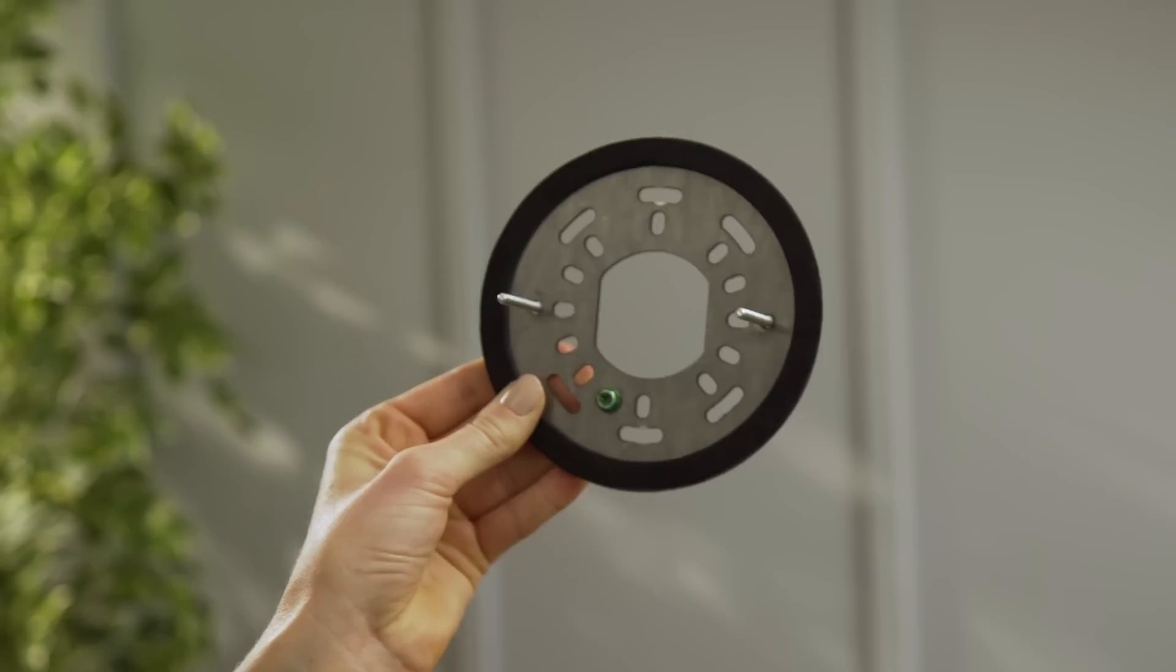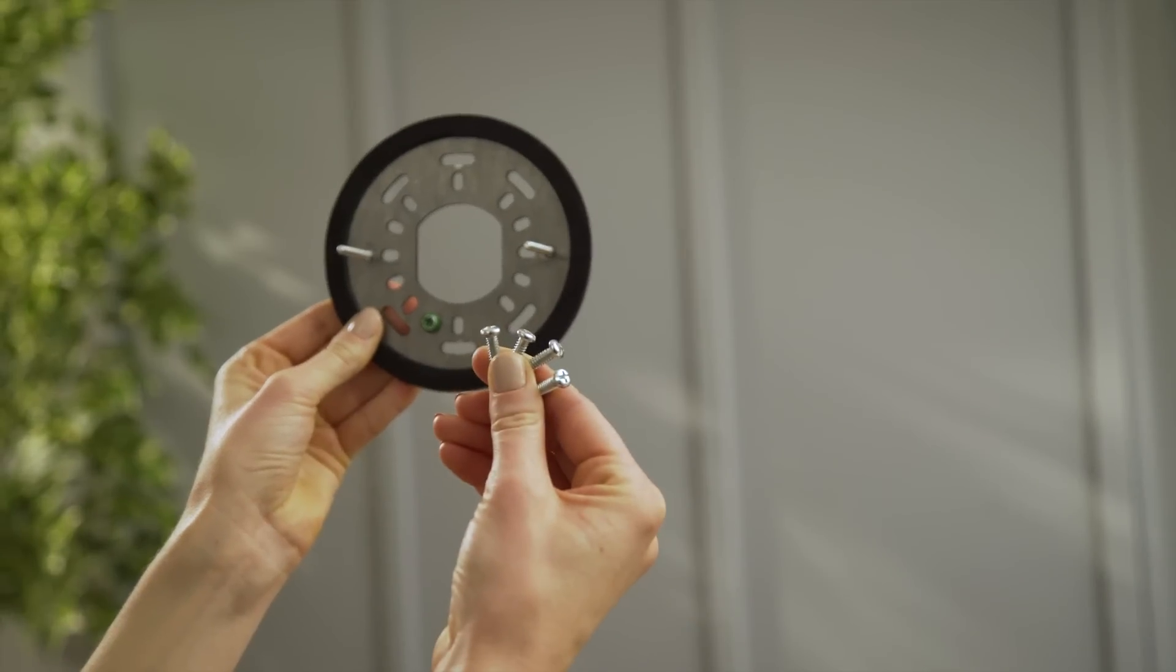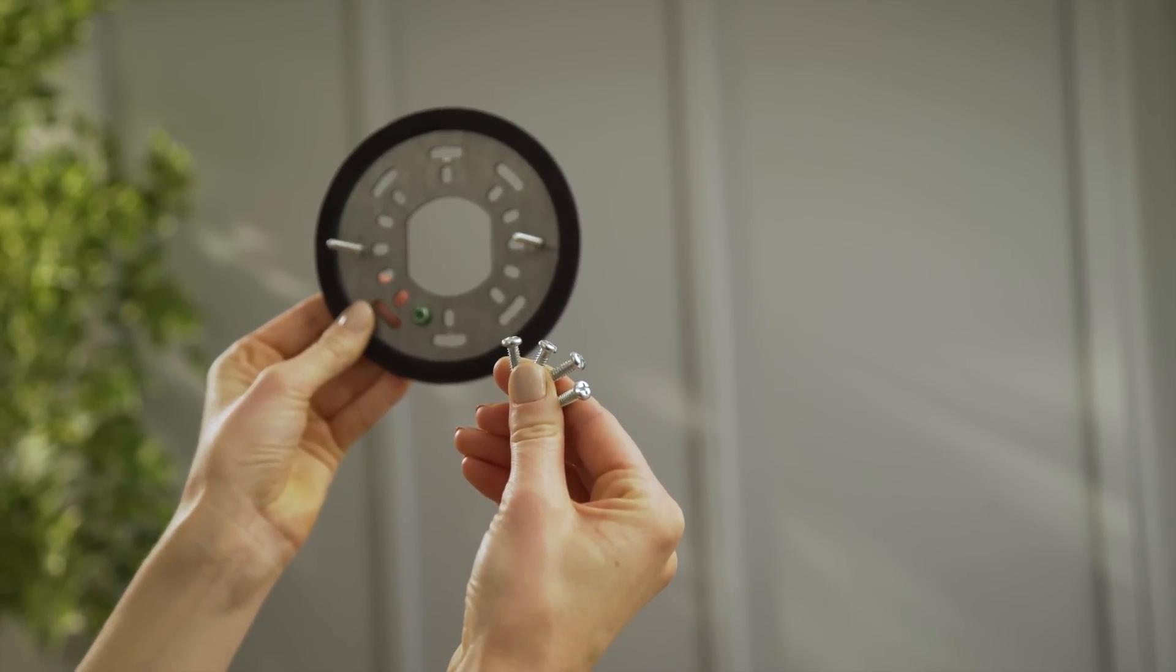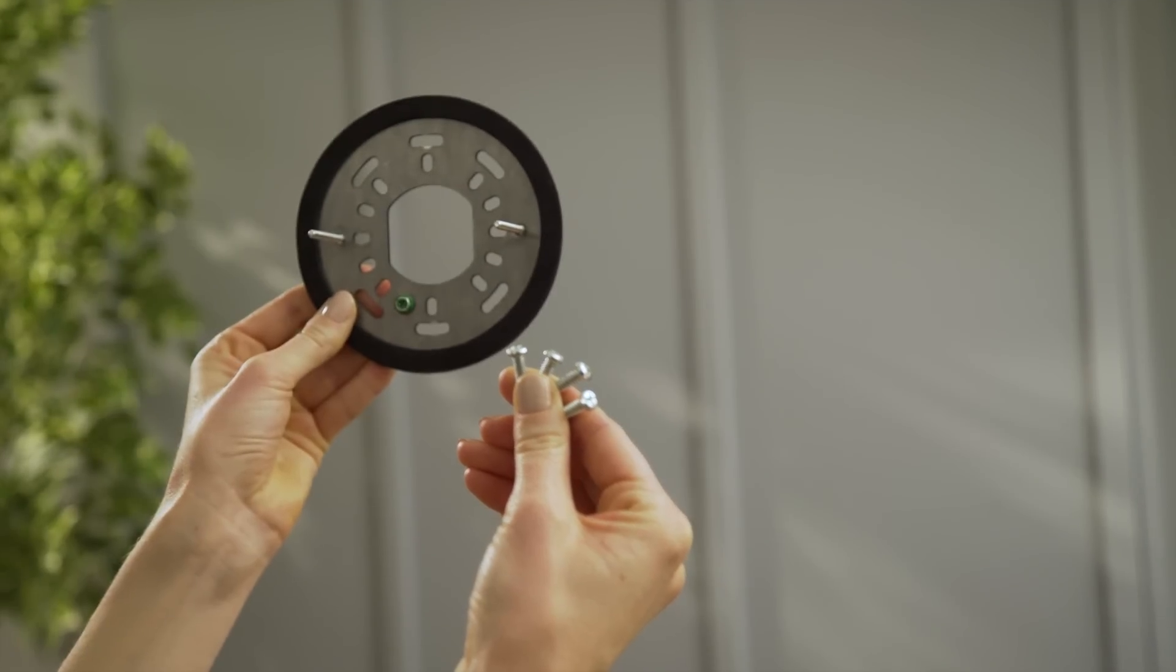This is floodlight cam's mounting bracket, which will attach to your junction box using these mounting screws. You'll only need two screws to securely mount your bracket, but we're including four just in case you want to use more.